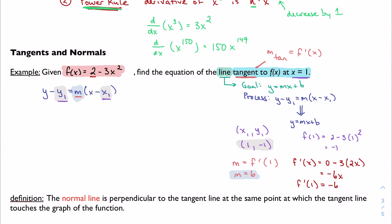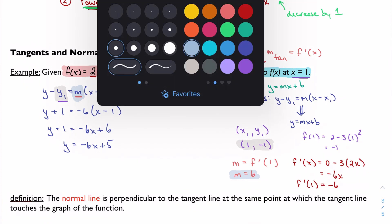Now I've got all of my information. Now I can go through and plug in. So y1 was negative 1. So minus negative 1 becomes positive 1. m is negative 6. x stays. x1 is just 1. At this point, it's all algebra. So I'm going to say y plus 1 equals negative 6x plus 6. y equals negative 6x plus 5. This is the equation of my tangent line at x equals 1.